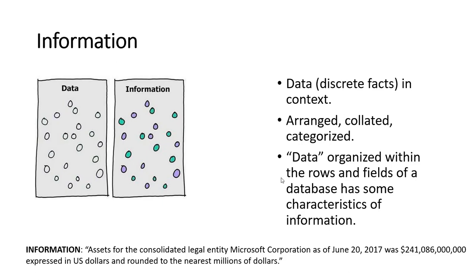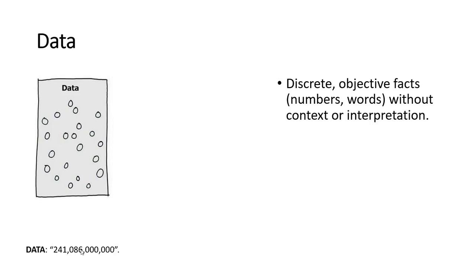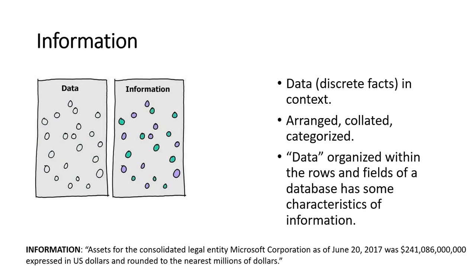You take that data, arrange it and organize it, and you get information — which is basically data in context. For example, assets for the consolidated legal entity Microsoft Corporation as of June 20th, 2017 was 241 billion, 86 million, expressed in U.S. dollars rounded to the nearest millions of dollars. You can exchange this information and give it to somebody else and they can use it also. If you just exchanged the raw number without anything else, the person receiving it might not even know what it is.